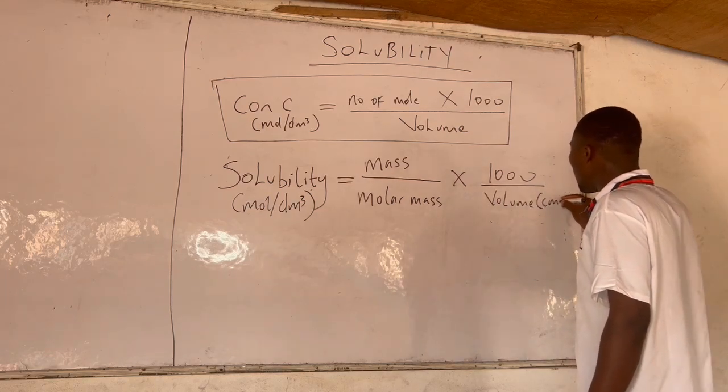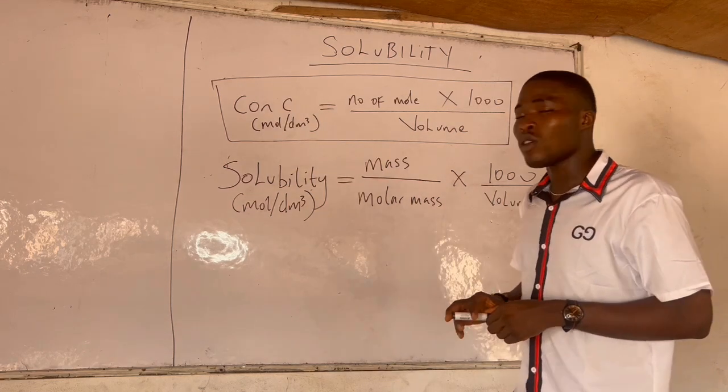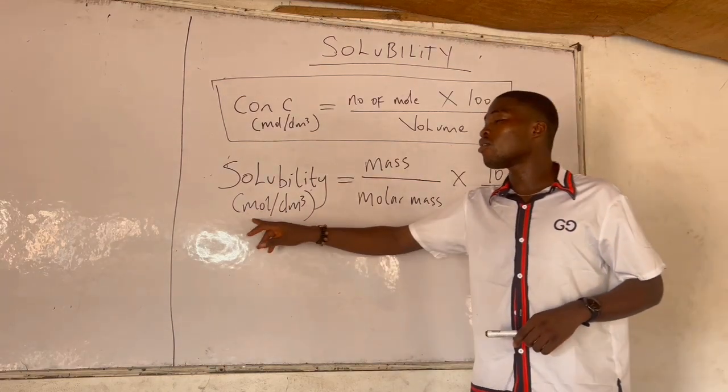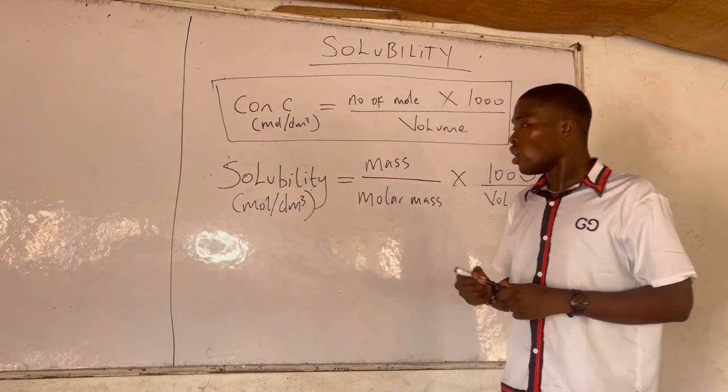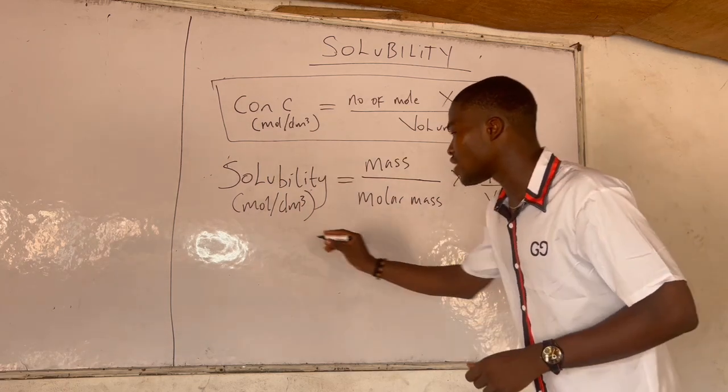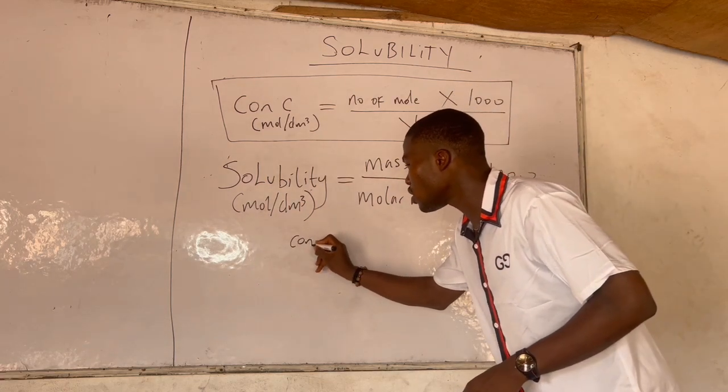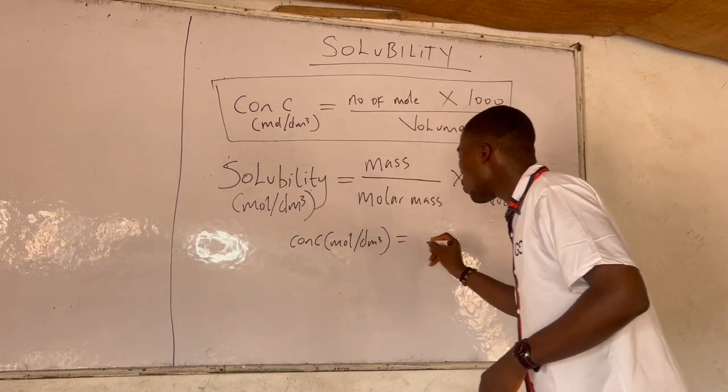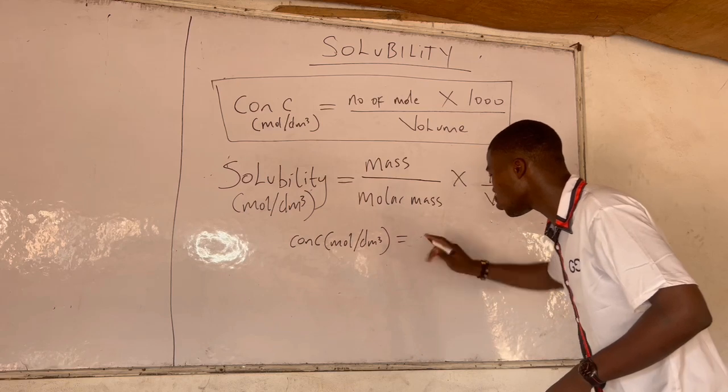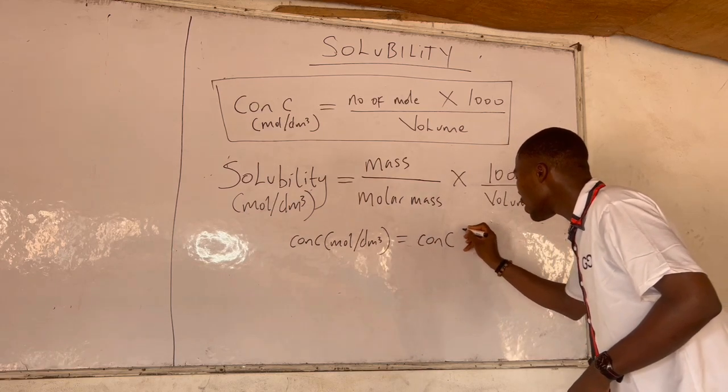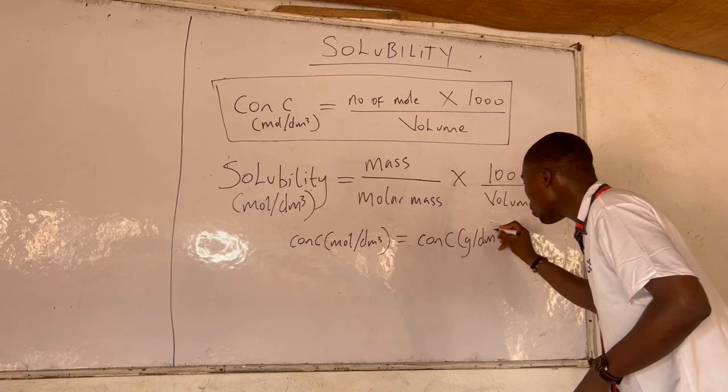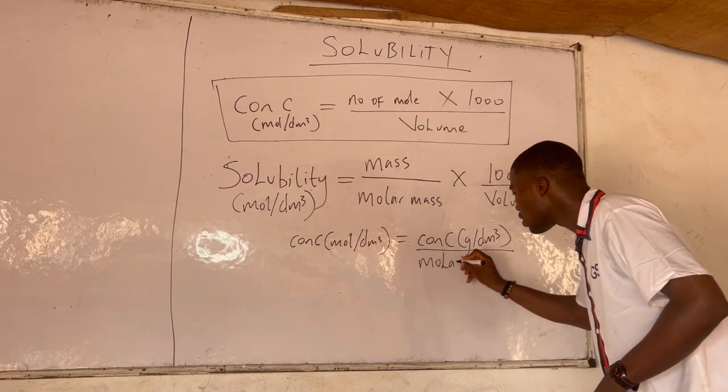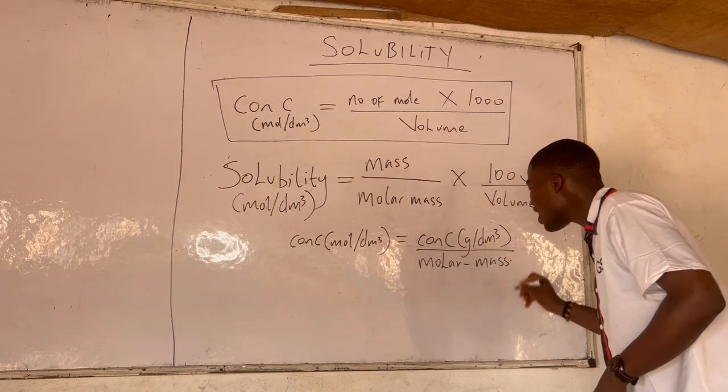Now how about when the question asks you to calculate for the solubility in grams per dm³? Very easy. You should note this: that concentration in mole per dm³ is equal to concentration in gram per dm³ over molar mass.